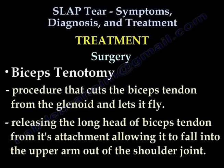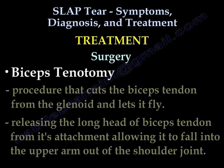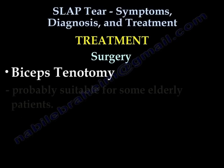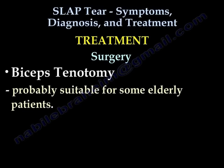Biceps tenotomy is another procedure that cuts the bicep tendon from the glenoid and lets it go free. By releasing the long head of the bicep tendon, this allows it to fall into the upper arm out of the shoulder joint. Biceps tenotomy is probably suitable for some elderly patients.